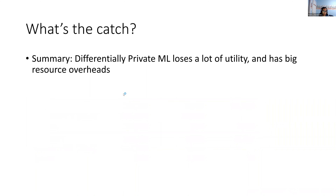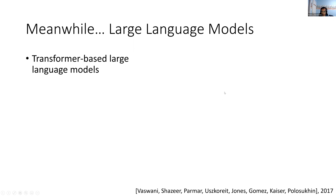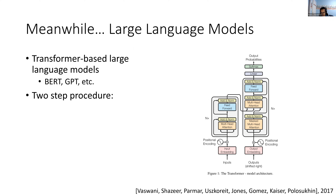Now I'm going to tell you about something a bit different that may be familiar to more of you — large language models. This is what's known as a transformer architecture, from a very influential paper by Vaswani et al. in 2017. Transformer-based large language models — things like BERT, GPT, et cetera — have really achieved new states of the art in language tasks, as well as recently being used in vision and lots of other fields.